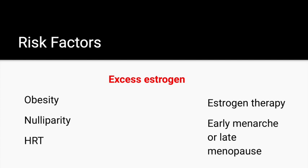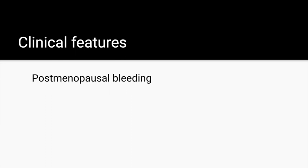Hormone replacement therapy is most commonly given to menopausal women with moderate to severe vasomotor symptoms such as hot flashes. Patients with a uterus require estrogen plus progesterone therapy, which decreases the risk of endometrial cancer associated with unopposed estrogen. However, patients without a uterus require estrogen-only therapy, for example a transdermal patch. Progesterone counteracts the effects of estrogen.